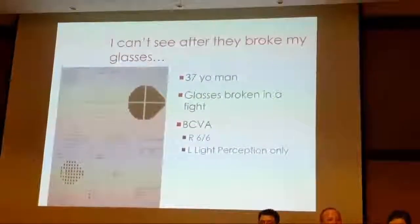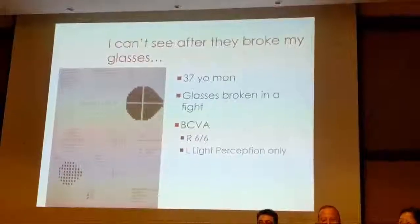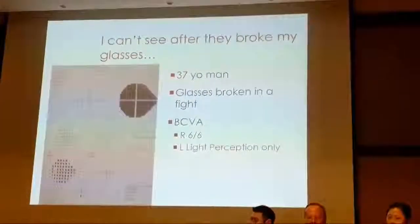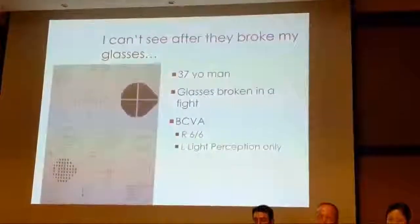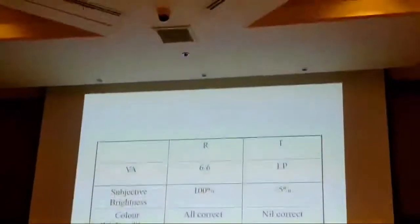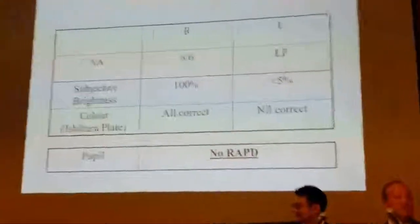Here is a 37-year-old man — a typical Australian after a bar fight. He broke his glasses and presented with alleged vision in the left eye of light perception only. He had a very black-looking visual field and said it was really dim, probably less than five percent. He identified all the Ishihara plates correctly, yet he could not even see the test plate with that left eye. Crucially, I could not find a RAPD — that's when my index of suspicion started.